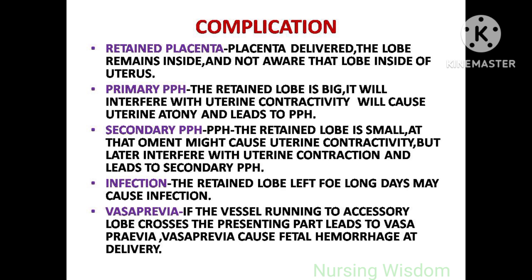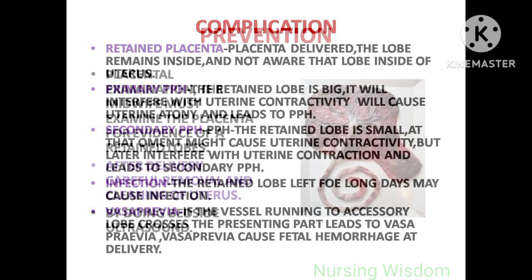Secondary PPH: if the retained lobe is small, at that moment it allows the uterus to contract well, but later it interferes with uterine contraction and leads to hemorrhage — that is secondary PPH. Infection: the retained lobe left for many days may cause infection. Vasa previa: if the vessels running to the accessory lobe cross the presenting part, it leads to vasa previa, which can cause fetal hemorrhage at delivery.